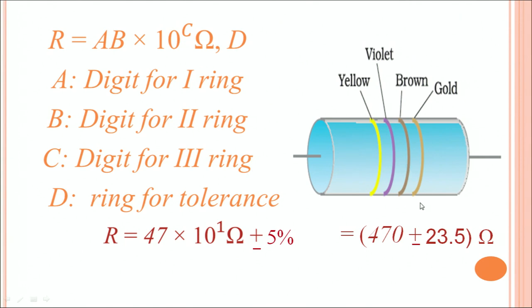Now, what is the significance of golden color? The golden color signifies that this has a tolerance of 5%. 5% means whatever is the digital value that you have just read, 470 ohms, if you use a multimeter to read the value exactly, then you can have a value of 470 ohms ± 5% of that. That means the value can turn out to be 470 ± 23.5 ohms, or (470 ± 23.5) Ω.